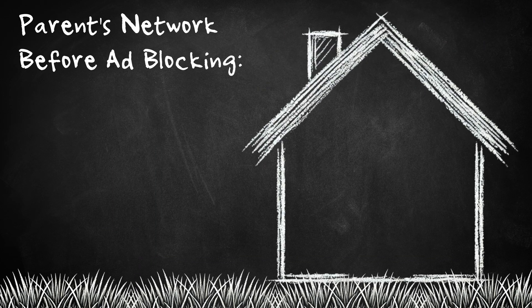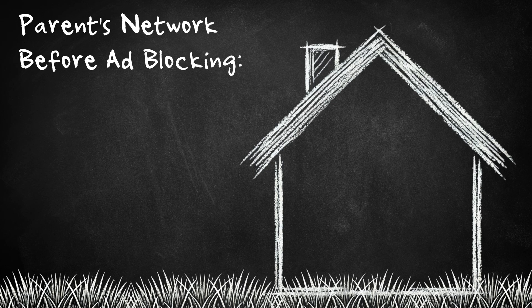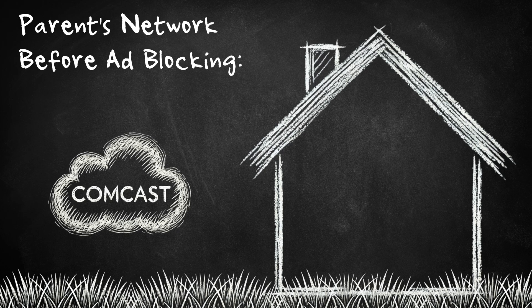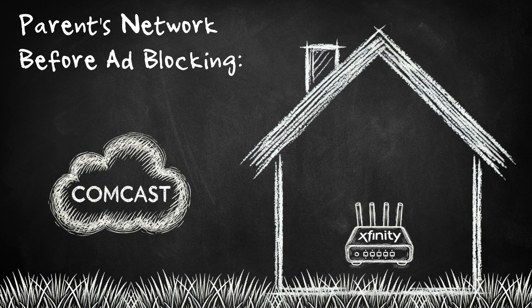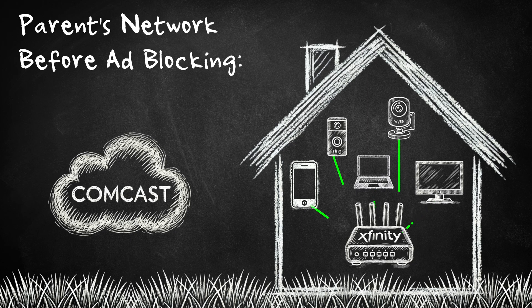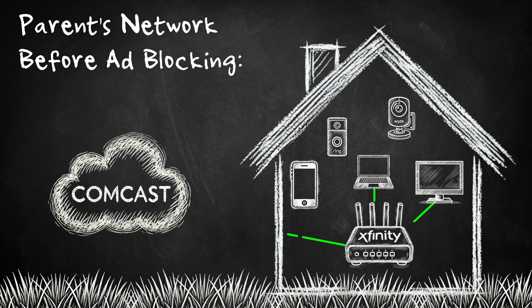Let's take a look at what it looks like to deploy Pi-hole from a network diagram perspective. Here's my parents' network before I introduced Pi-hole to block ads for them. Their network is very simple. Their ISP is Comcast, and they use the provided Xfinity Wi-Fi router for everything in their home. Everything is connected via Wi-Fi — their mobile phones, smart TVs, IoT cameras, and computers. In this setup, whenever a device needs to resolve a website like google.com, their client would connect out to a public DNS server to get its answer and then make a connection.